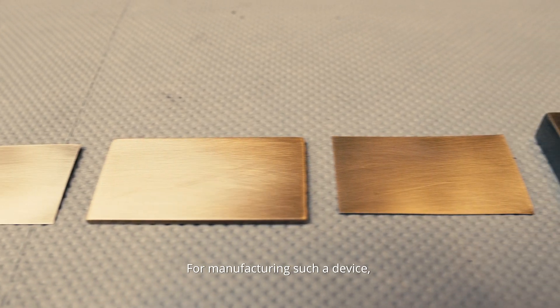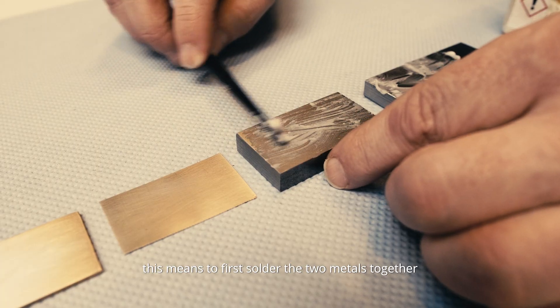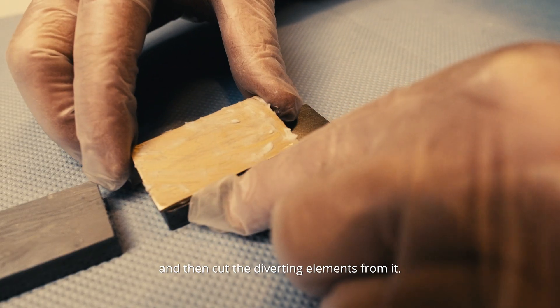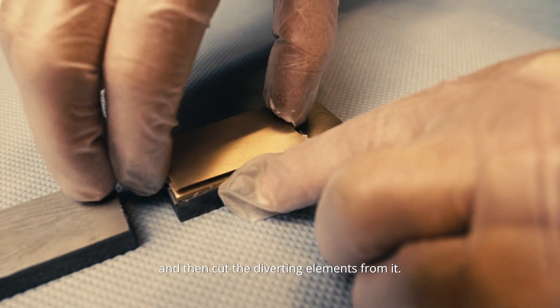For manufacturing such a device, this means to first solder the two metals together and then cut the diverting elements from it.